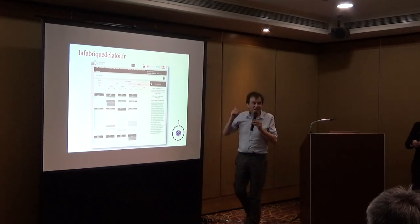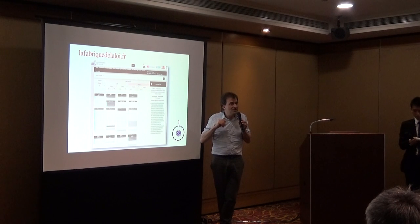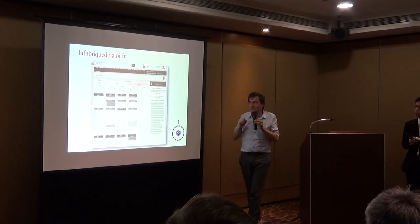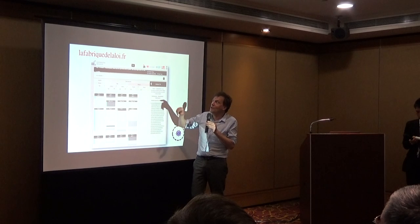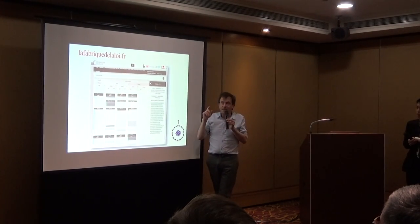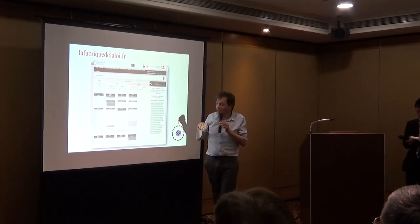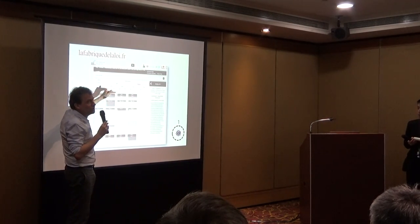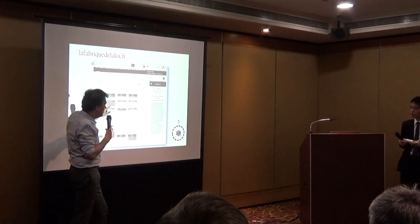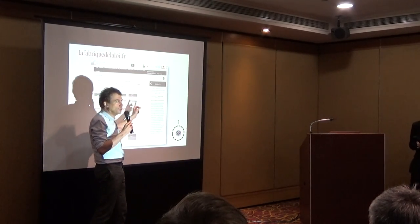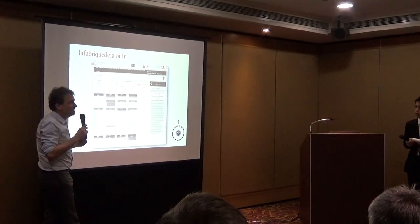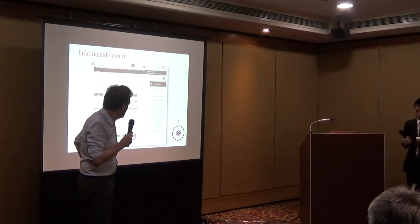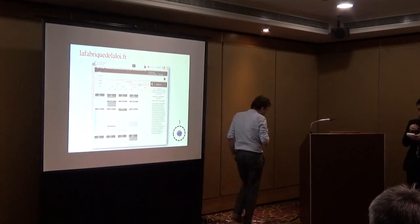The same collective also produced another website, developed with my research lab Médialab. It's called 'the making of the law' — la fabrique de la loi. It helps citizens and journalists go inside the way a law is produced, title by title, chapter by chapter, article by article, with amendments. You can see what the discussion was about, what amendments were proposed, and who voted for or against them. It's a kind of zoom tool that helps us explore the making of the law.